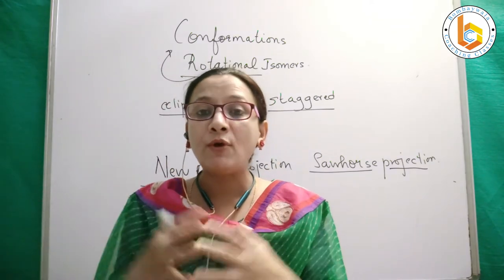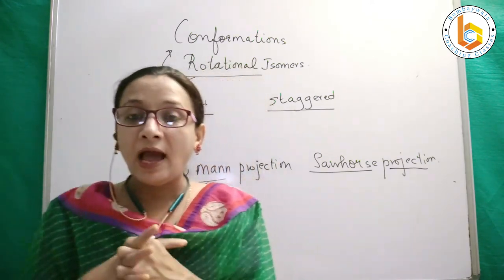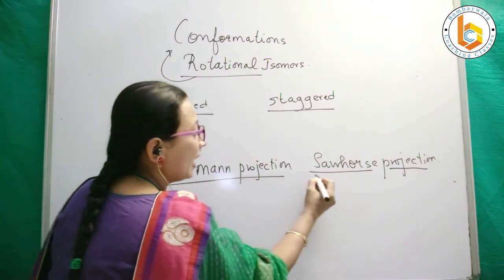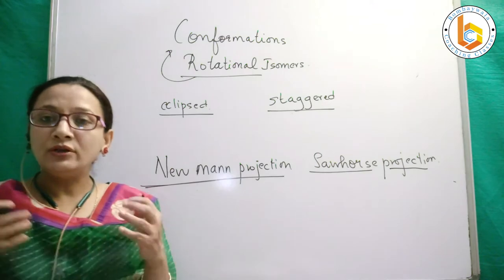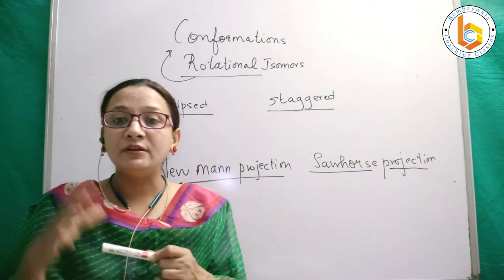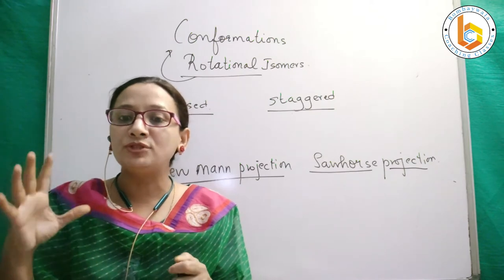If I want to represent it on paper, I have these two methods by which I can do it: Newman and sawhorse. Let us talk about the Newman projection. How can we represent it by Newman projection?